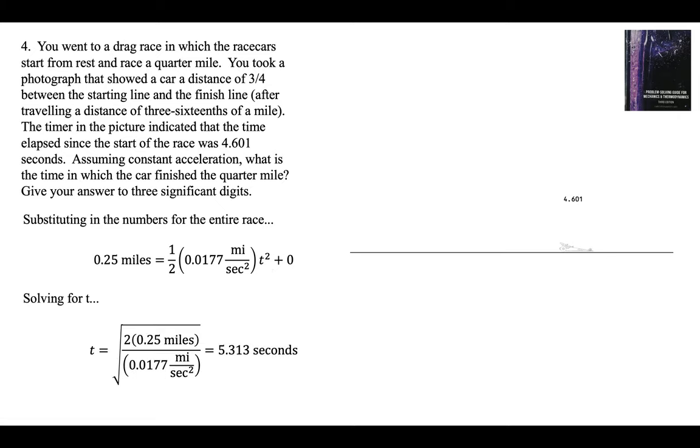5.31 seconds to three significant digits, which is not much more than 4.6. But the drag race car is going so much faster the last quarter, the last fourth of the race, than the first fourth of the race. So the time it takes to get from three-fourths to the finish line is much, much less than the time it takes to go the first fourth of the race.